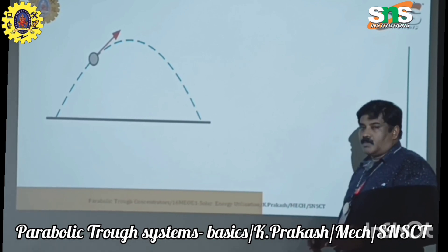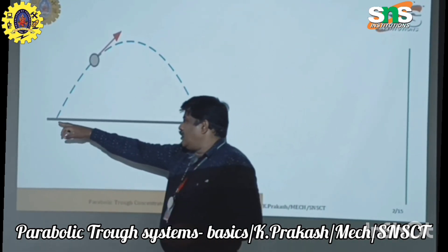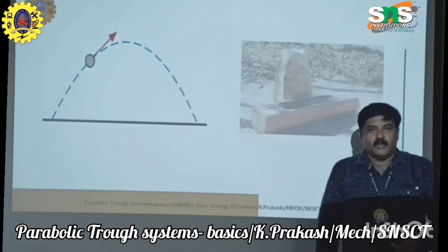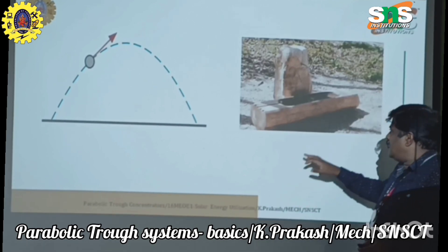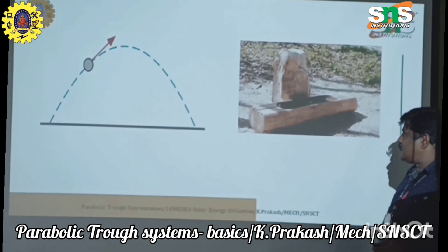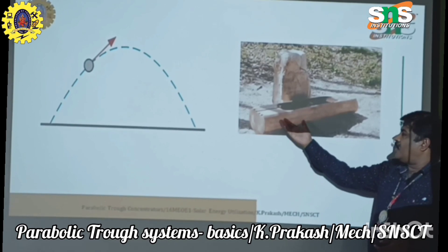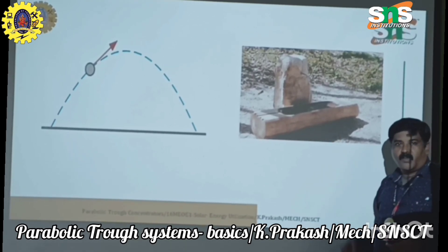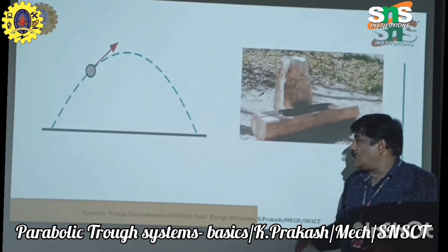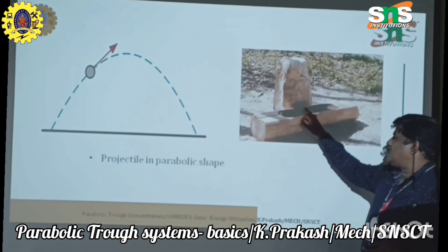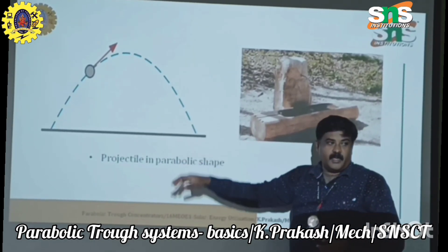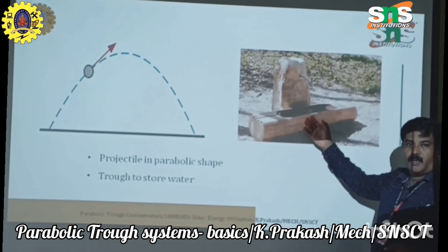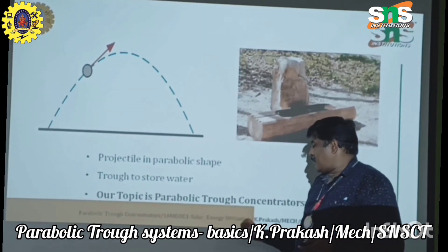What is happening in this diagram? This is a projector and when the projector projects, it goes like this — this shape is called a parabolic shape. This is a wood or stone where the surface is curved and there is a hollow area. This is a collector — a parabolic shape — and this is a trough to store the water. So our topic today is the parabolic trough concentrator.